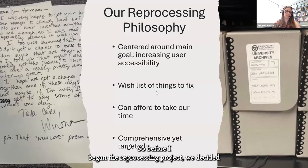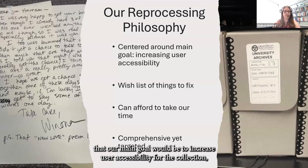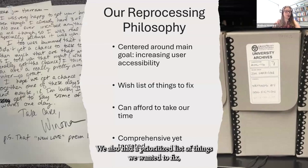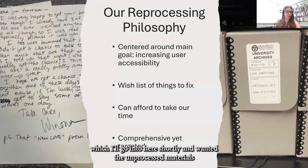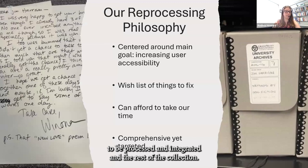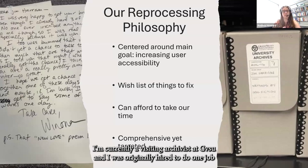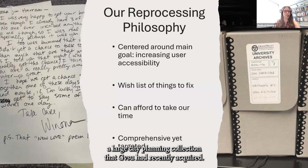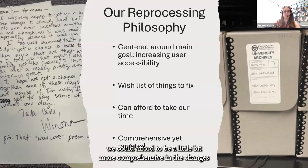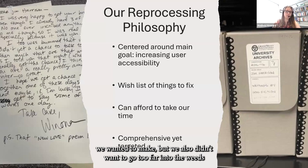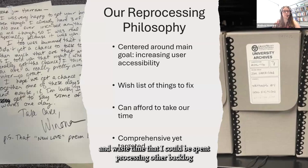Before I began the reprocessing project, we decided our main goal would be to increase user accessibility for the collection. Any processing decisions, in addition to following best practices, would make sure that collection use would become easier and more straightforward. We also had a prioritized list of things we wanted to fix — my project manager most wanted our boxes renumbered and wanted the unprocessed materials to be processed and integrated into the rest of the collection. I'm currently a visiting archivist at GVSU, and I was originally hired to process a large city planning collection. I finished that in about eight months, leaving me with more than two years still left on my contract, so this was chosen as my next big project.